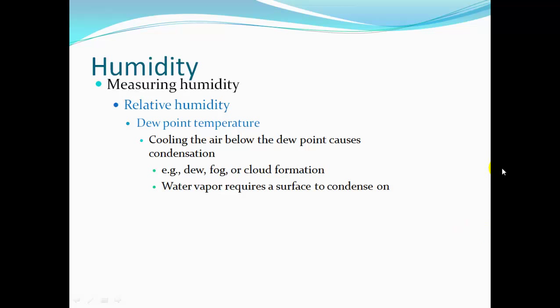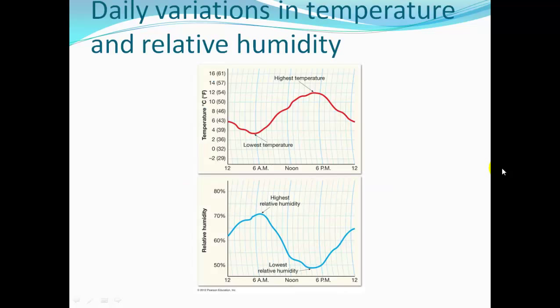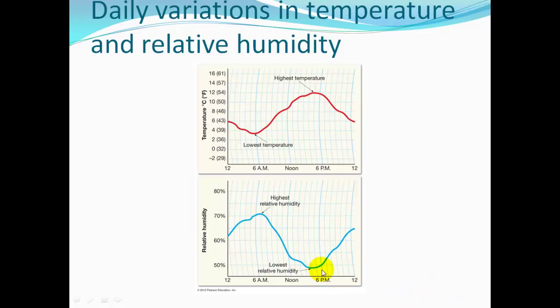The dew point temperature — cooling the air below dew point causes condensation, such as dew, fog, or cloud formation. Water vapor requires a surface to condense on. Over the course of a day, temperature decreases after midnight, then increases as the sun rises to the warmest part of the day, then cools off. Relative humidity is highest when temperatures are coolest. As temperature heats up and can hold more moisture, relative humidity goes down unless moisture is added. In the evening, relative humidity increases.